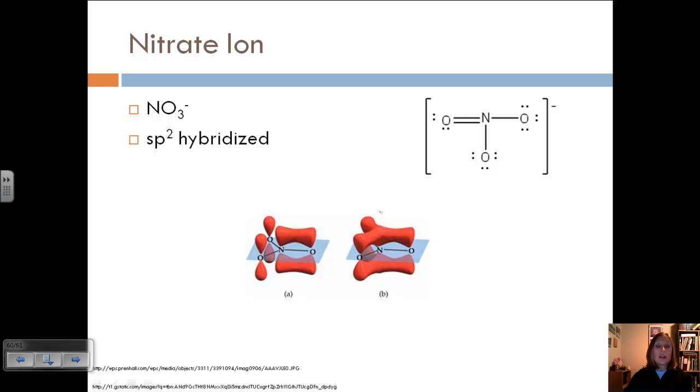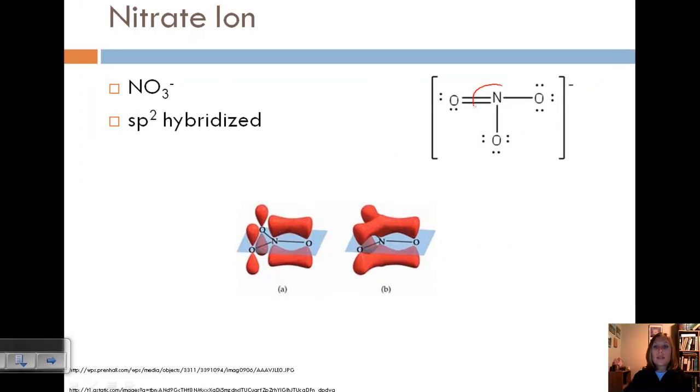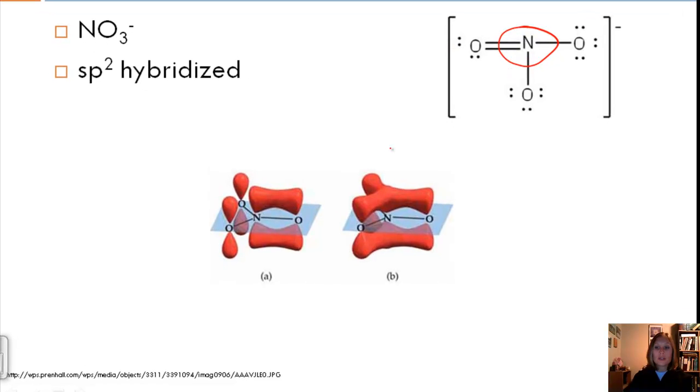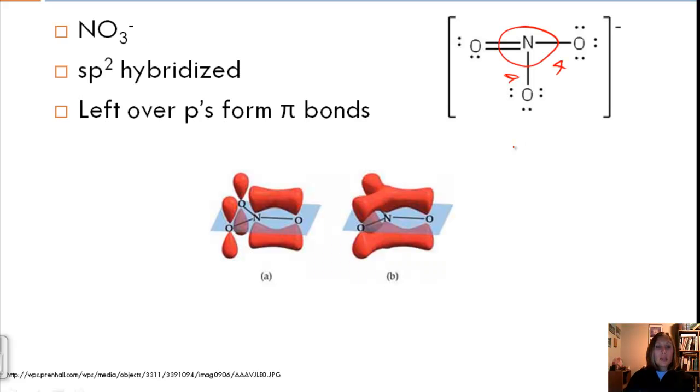Let's look at one more example. So the nitrate ion is also SP2 hybridized. You can see that we have three electron domains around the nitrogen, so that gives us SP2. But then we've got this rotating double bond. We could put it here or we could put it here. And so the leftover p orbitals are what form those pi bonds or forms that double bond that rotates. And so you can see that's kind of what we're showing with this structure. We've got our delocalized pi bonds or p orbitals.